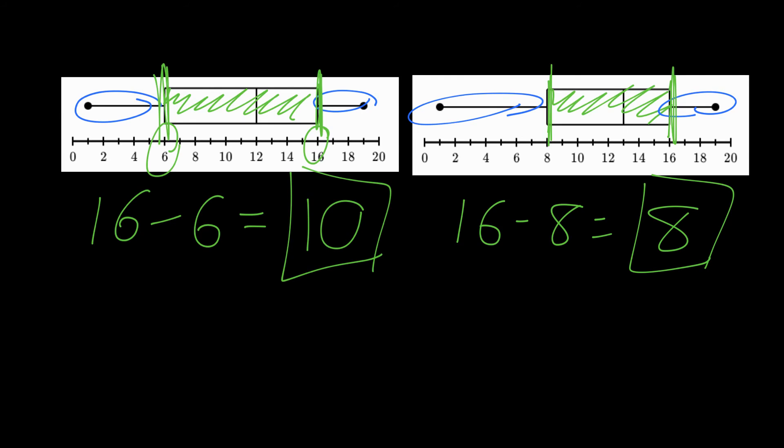So when you have the box and whisker plots, finding the interquartile range is even easier, because instead of the range—the actual range, as we've learned before—the range would be from the end of the whisker to the end of the whisker. That's the total range. The green part would be the interquartile range, because it's the two inner quarters.